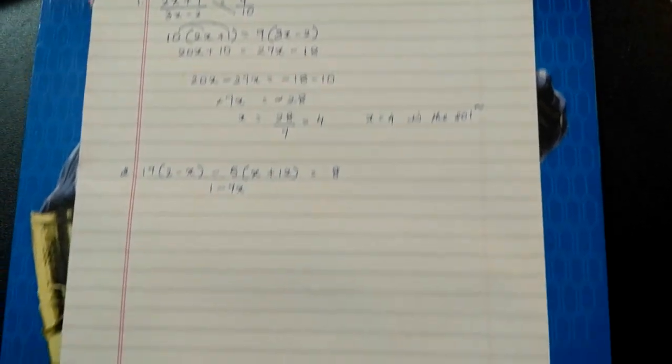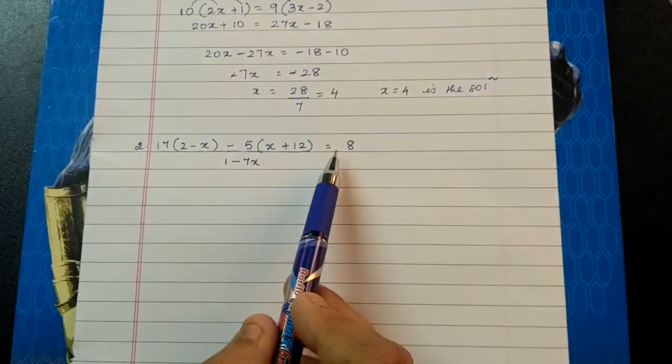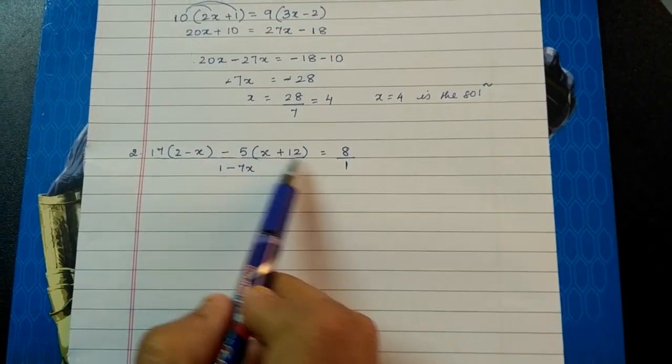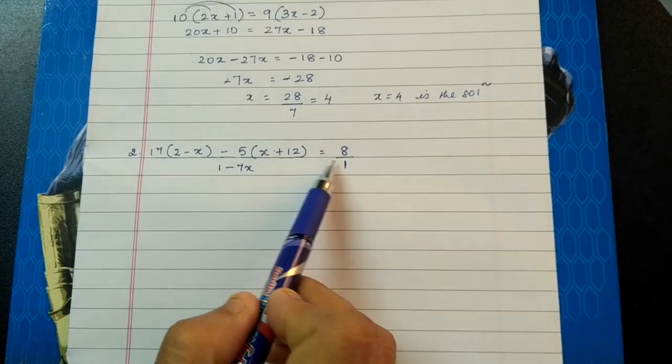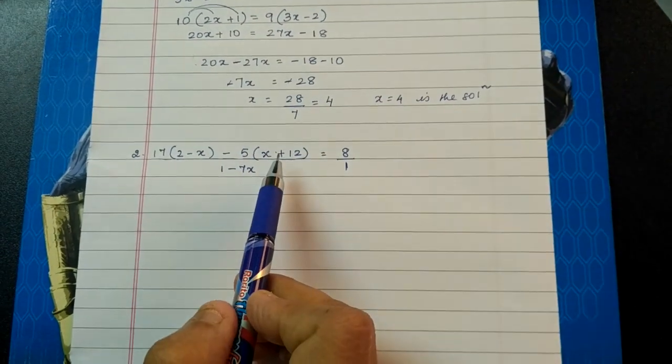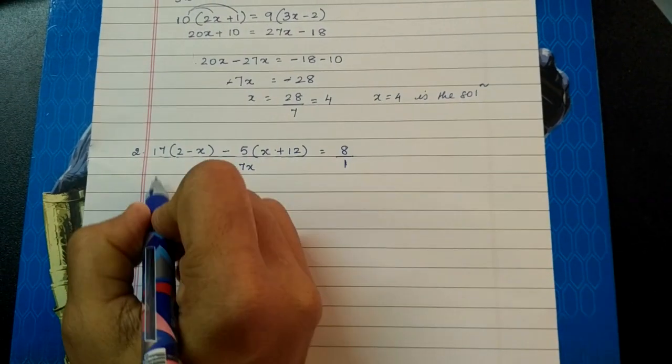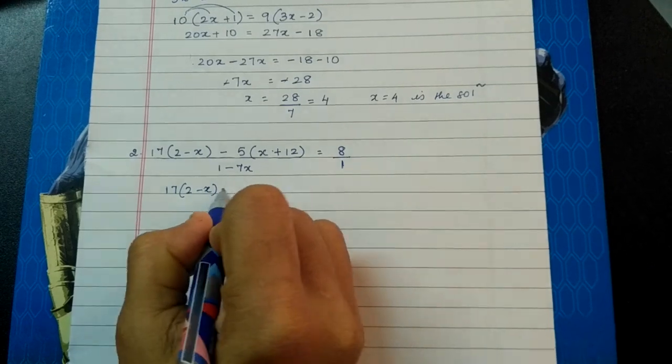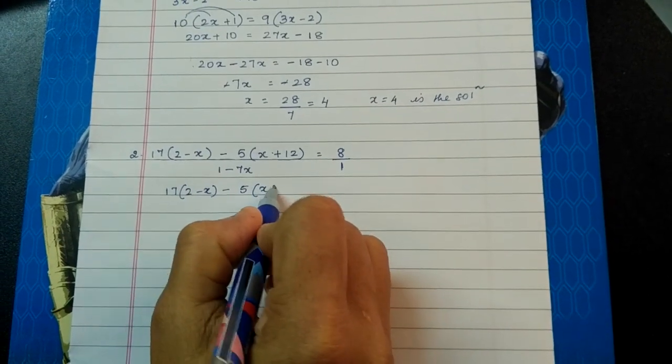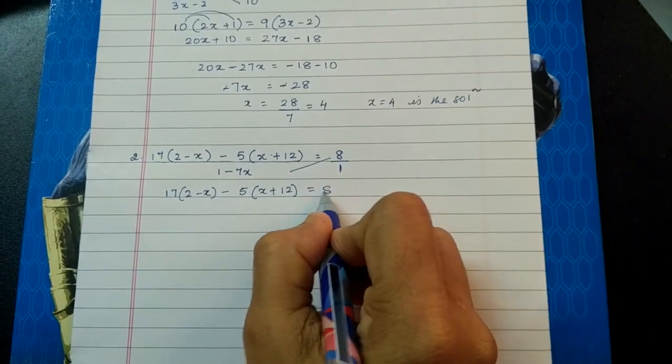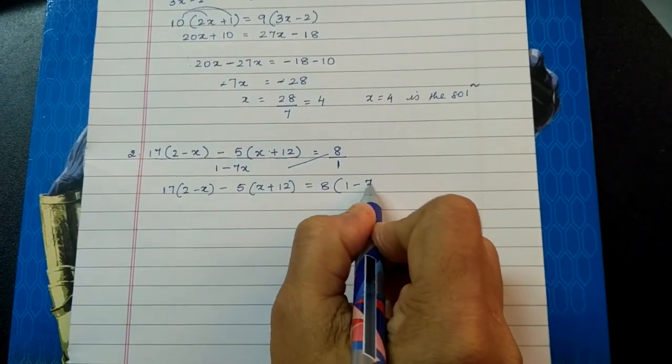Let us go to next sum, children. Now if you see here, there is no denominator. So if there is no denominator you can write it as 1. So when you cross multiply, any number multiplied by 1 will be the same number. So the numerator here is not going to change, it will remain as it is. And 8 here has to be multiplied with 1 minus 7x, the whole. So we will write like this.